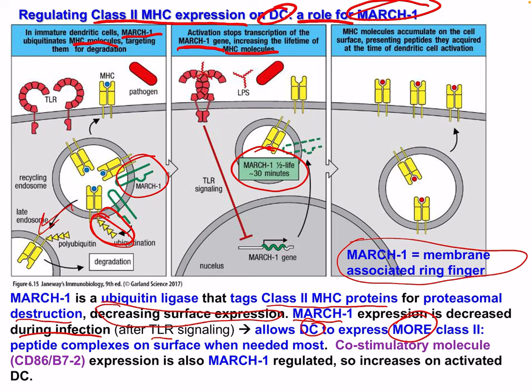MARCH1 is a ubiquitin ligase that causes ubiquitination, tagging class 2 MHC proteins for proteasomal destruction, decreasing surface expression of class 2. MARCH1 expression is decreased during infection after toll-like receptor signaling, allowing dendritic cells to express more class 2 peptide complexes on the surface when needed most. Co-stimulatory molecules such as CD86, also known as B7-2, are also MARCH1-regulated, increasing on activated dendritic cells. Since T cells need co-stimulatory molecules, the fact that MARCH1 controls both allows it to work optimally.